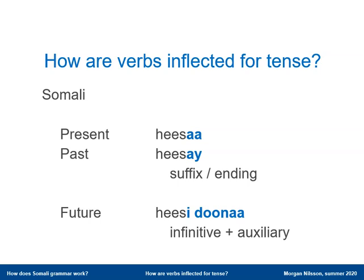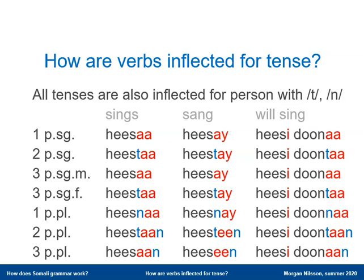There is an important difference in the future tense, and that is that the auxiliary follows after the infinitive form in Somali. But in English there isn't very much more to say when it comes to inflection. But in Somali these endings are not the whole picture, because in Somali verbs are also inflected for person and number.